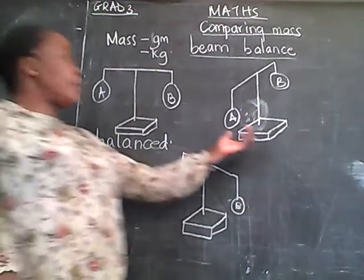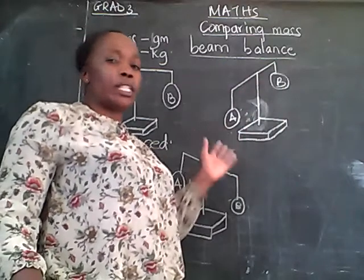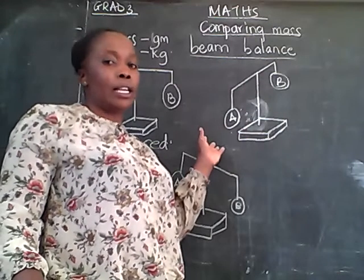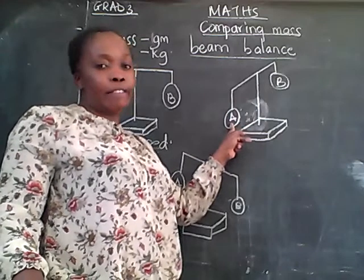Now, if you look here, you find that the bar has twisted and leaned on one side. When it is like this, it shows that A is heavier than B.